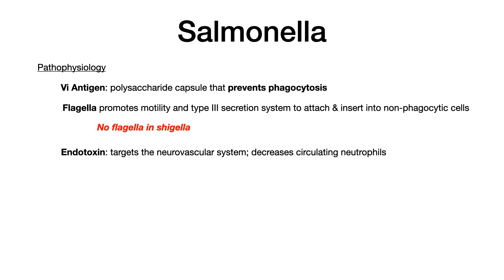Lastly, we have an endotoxin. This endotoxin targets the neurovascular system. Once inside the host, it decreases circulating neutrophils, which limits the immune response and makes it more likely to cause overwhelming infection.